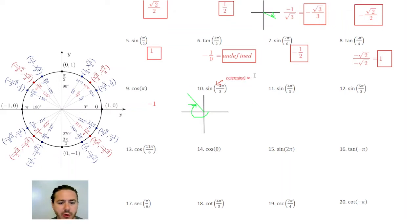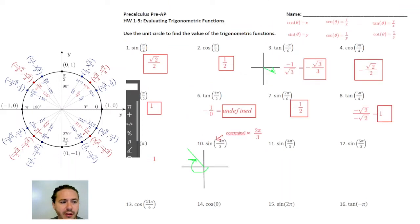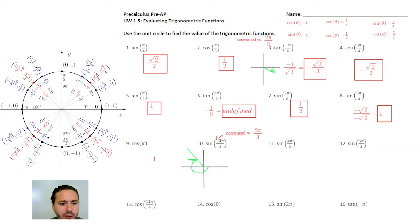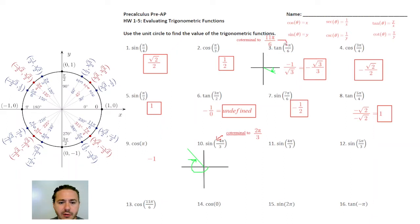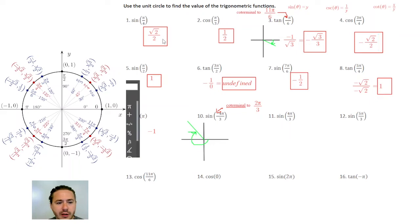Negative 4π over 3 is coterminal to 2π over 3 — that's another reason why we talk about coterminal angles, because they help us evaluate these things. So you're basically looking at the coordinate at 2π over 3, which is negative 1/2 comma √3/2. Since sine is the y value, we're going to have √3/2 as our answer. This is similar to above when we talked about tangent of negative π over 6, where we found a coterminal angle at 11π over 6.